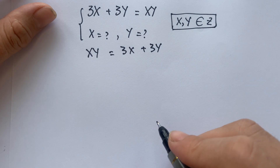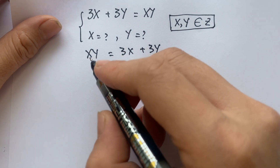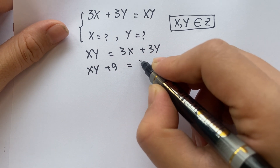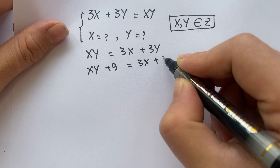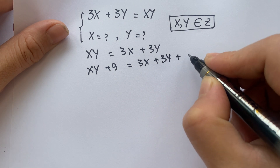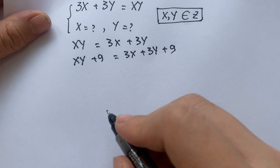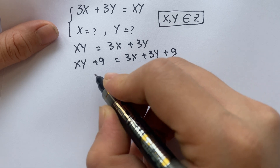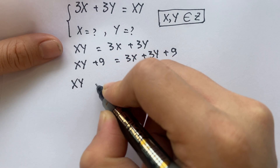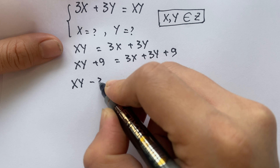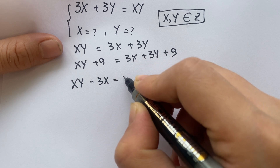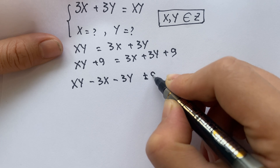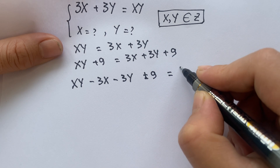And so, for the next step, you can add 9 to both sides. So, xy plus 9 equals 3x plus 3y plus 9. And then, you need to move 3x and 3y to the left-hand side. Therefore, we also have xy minus 3x minus 3y plus 9 equals 9.